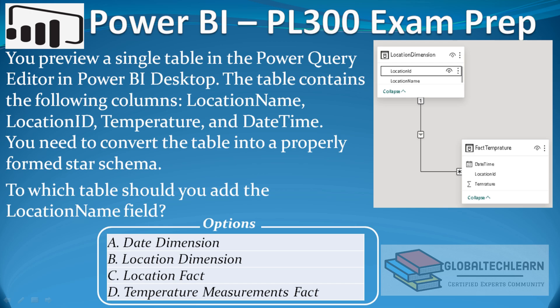The question is: you preview a single table in the Power Query editor in Power BI desktop. The table contains the following columns: location name, location id, temperature, and date time. You need to convert the table into a properly formed star schema.